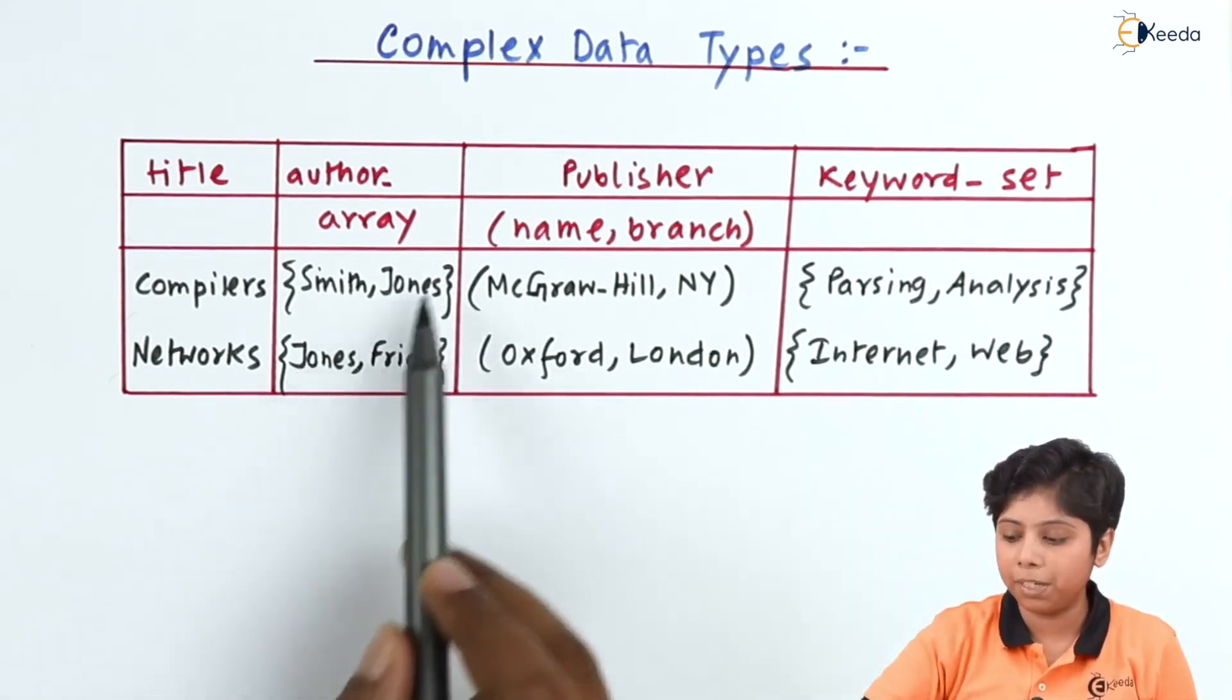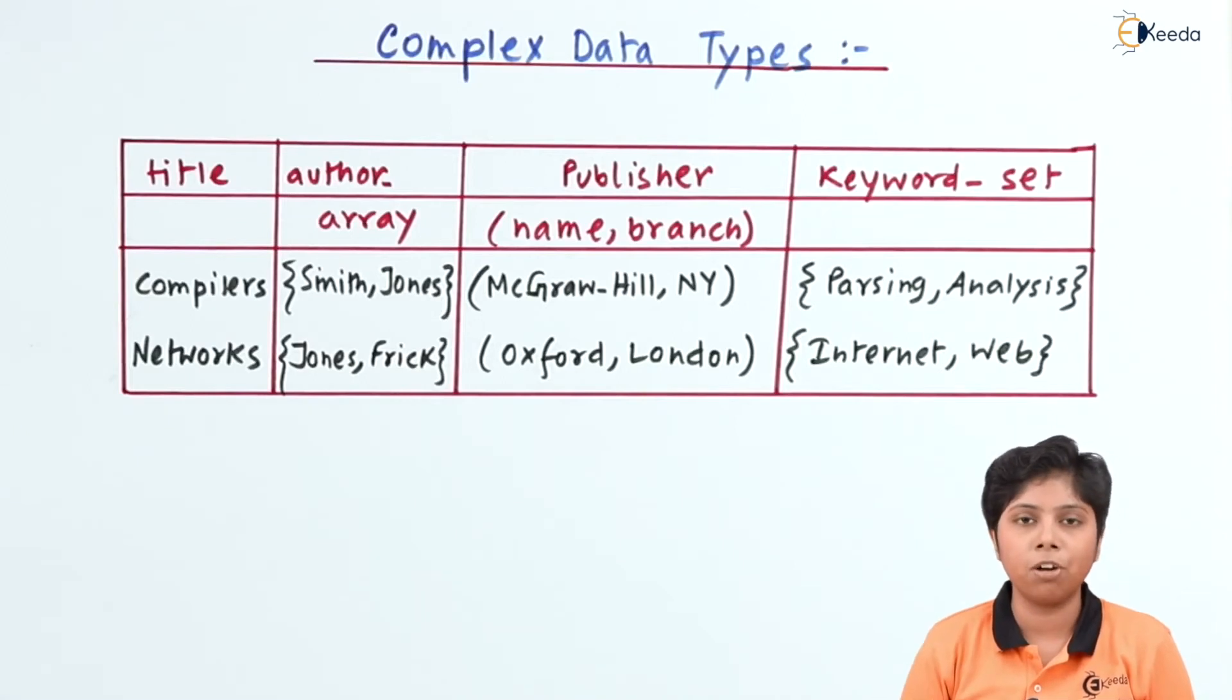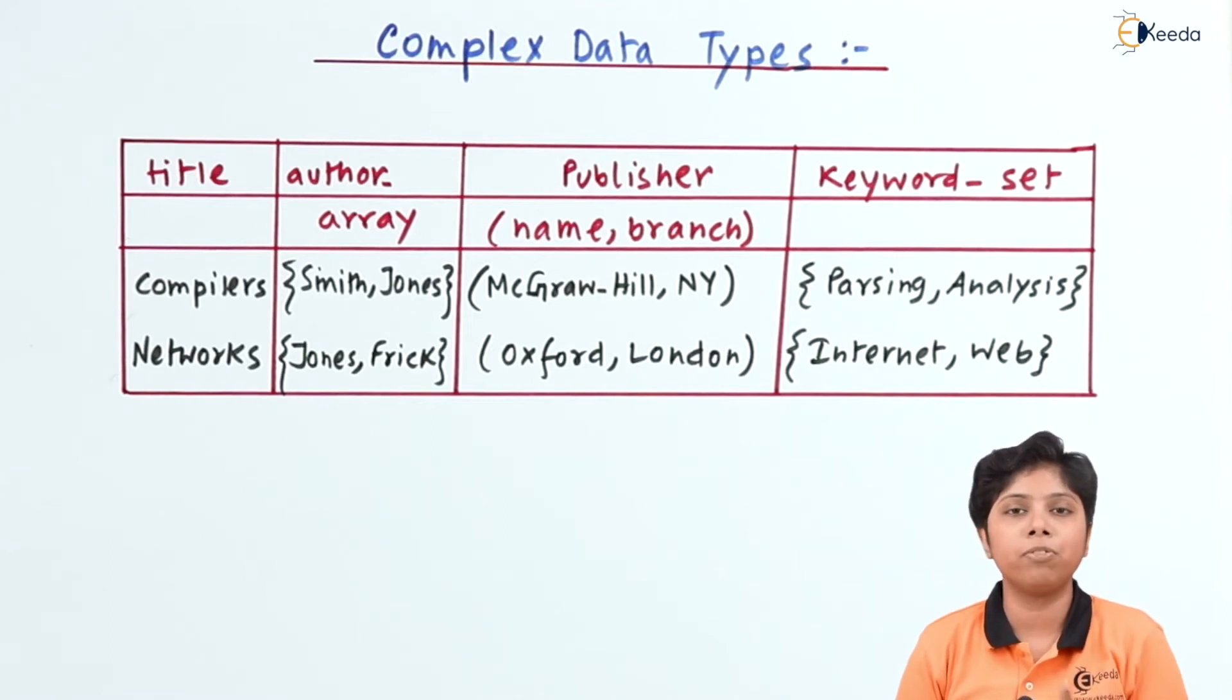So the data redundancy still relies here because Jones is repeating in both the information of an author. Now we can say that we will decompose this relation and make it break into relations that will have atomic data types, or attributes, as well as have all other referential integrity constraints.